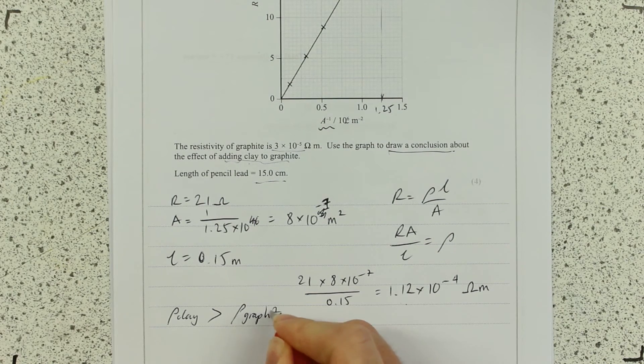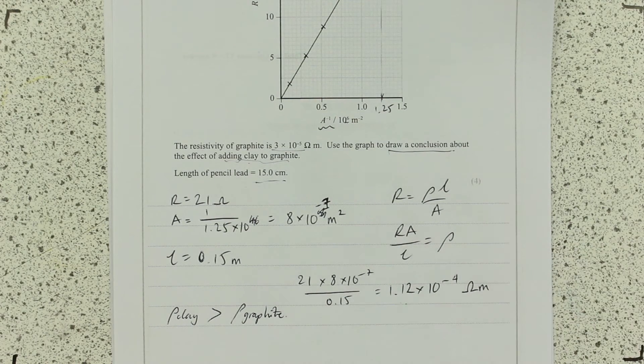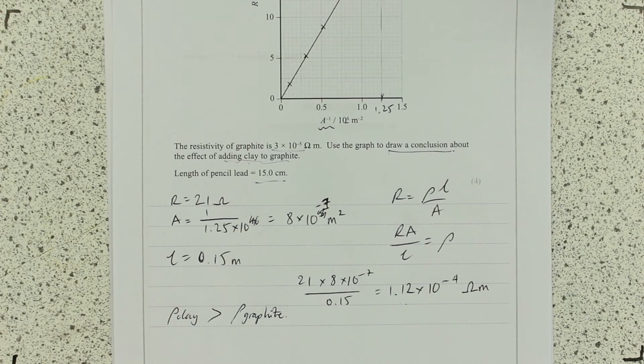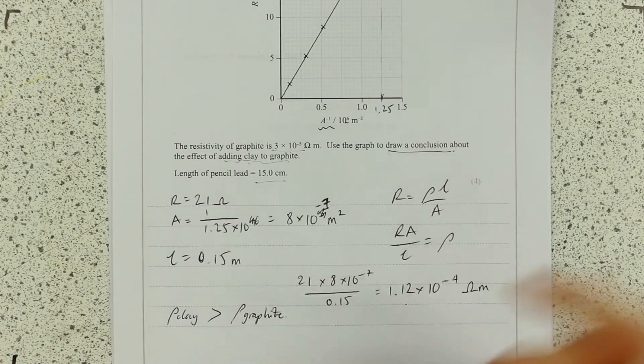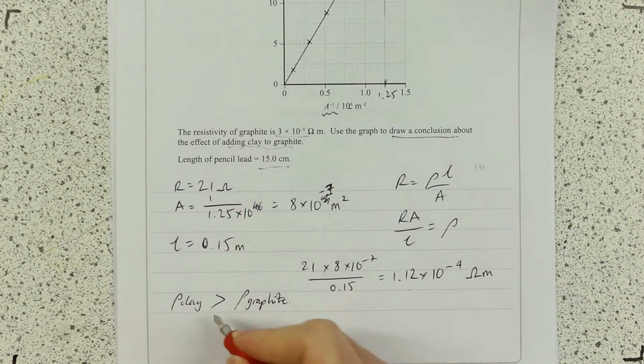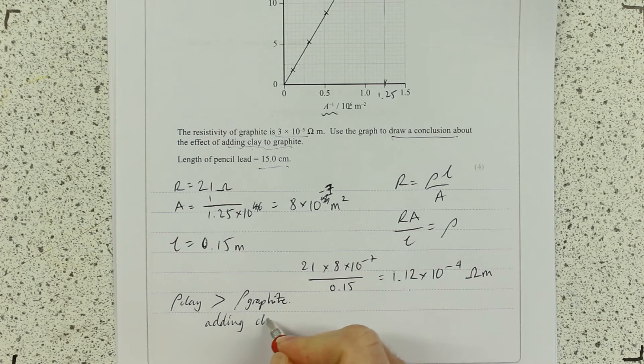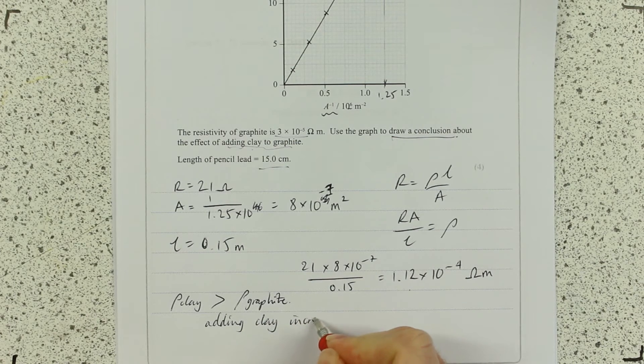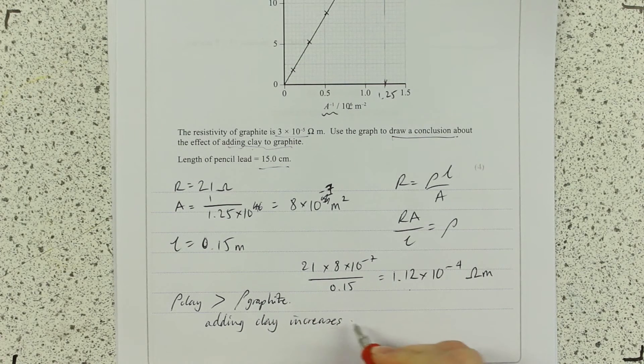And that makes sense when we think about what graphite is. It's got those layers with the free electrons in between. I'm happy with that. So that's my little conclusion there. So adding, I could finish that. Adding clay increases resistivity.